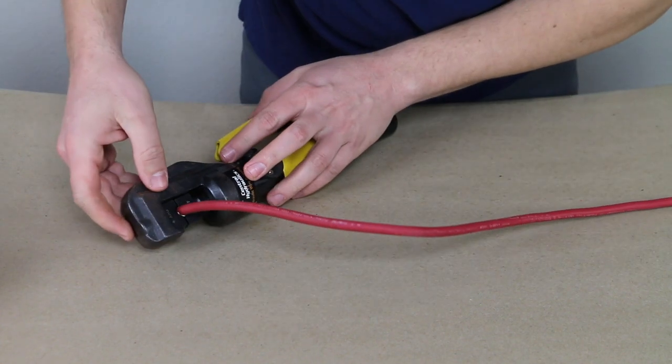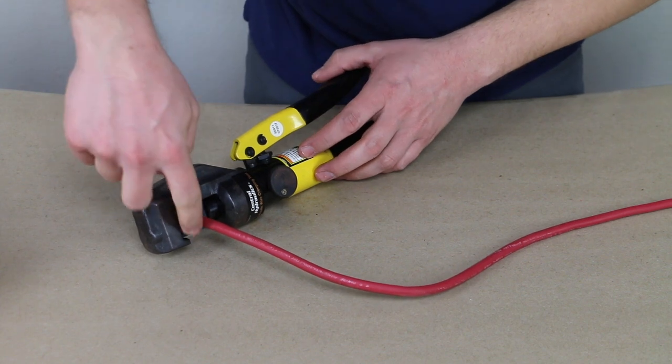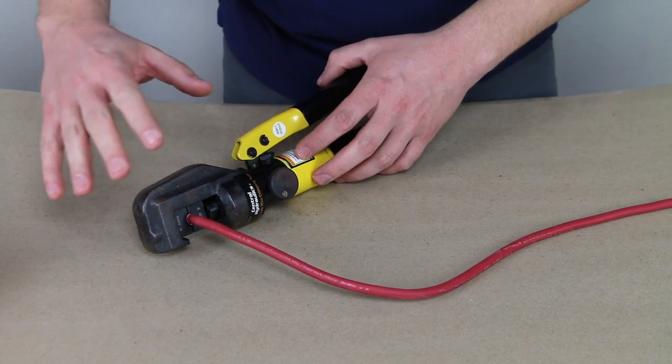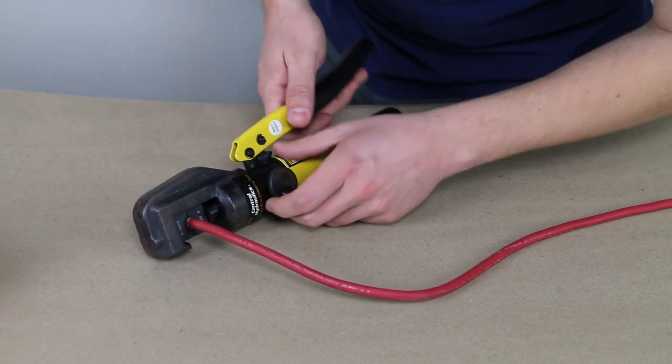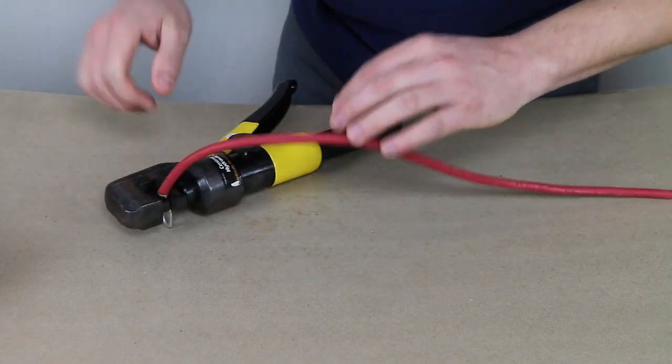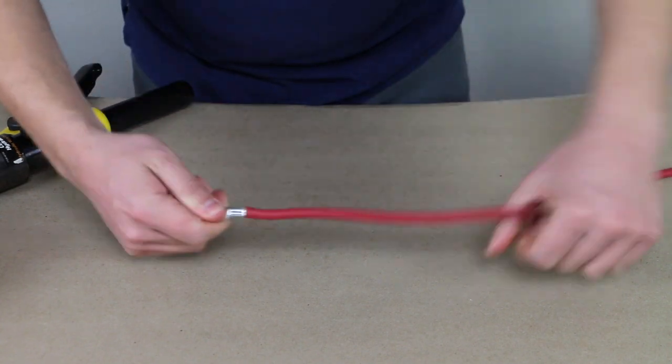Now you don't have to crush these all the way down until the jaws close, especially if you are using different size dies. Sometimes it's a little bit of an art, but if you go all the way, sometimes it can kind of squish the metal out and we don't want to do that. So that is a pretty good crimp.